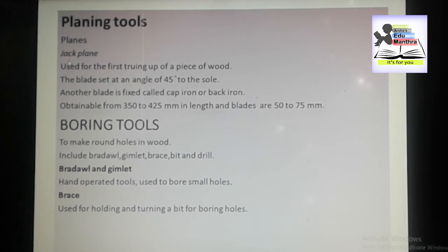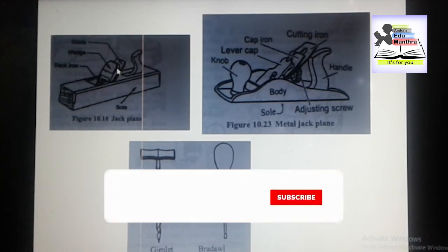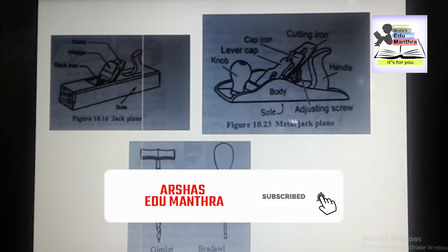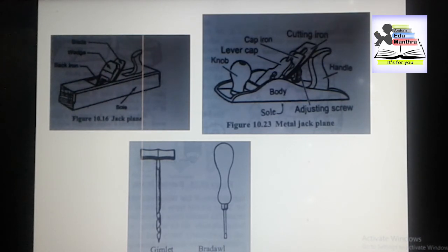We have the jack plane and the metal jack plane. The parts of the jack plane include the blade, wedge, and back iron. For the metal jack plane, the parts include the handle, cutting iron, cap iron, lever cap, and knob, among others.